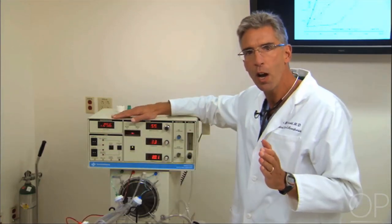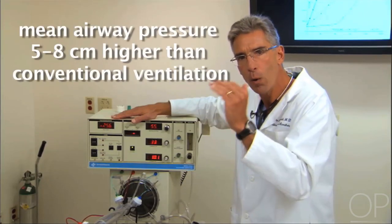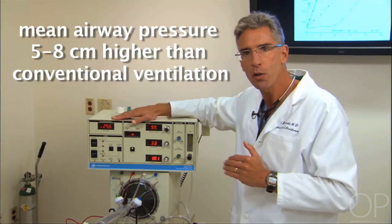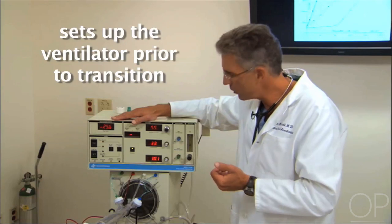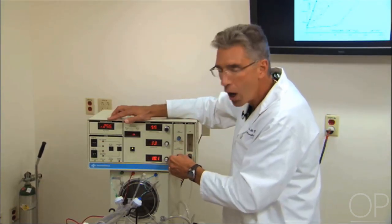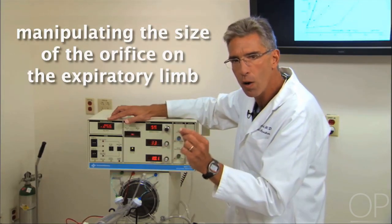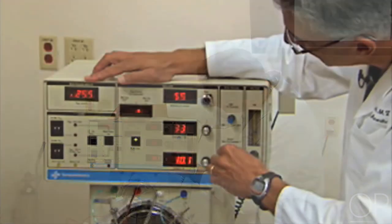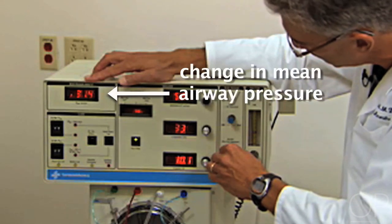As you know when we transition to high frequency, we will typically transition at a mean airway pressure 5 to 8 centimeters higher than we were on conventional. And one typically sets up the ventilator prior to transition. Now you can increase the mean airway pressure knob in one of two ways. You can adjust the mean airway pressure by manipulating the size of the orifice on the expiratory limb, which is what I do when I manipulate this knob. So I'm increasing mean airway pressure and I'm decreasing mean airway pressure.